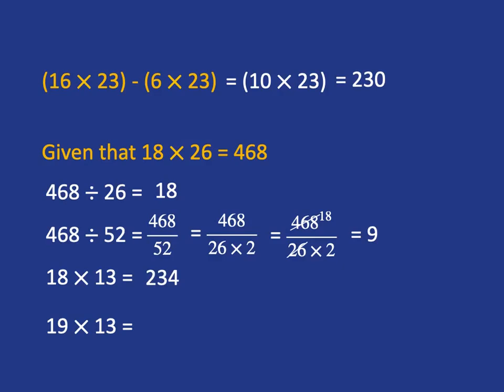And then the very last one, 19 times 13. Well, I know that if I had 18 lots of 13, so 18 bags with 13 sweets in them, I'd have 234 sweets. So what if I had 19 bags now? Well, I've just got one more bag of 13, so I just need to add 13 onto 234, and I will get my answer of 247.